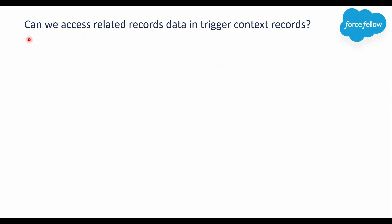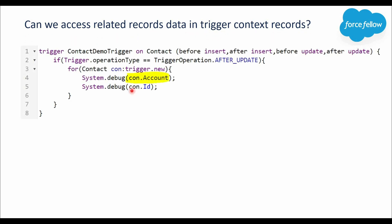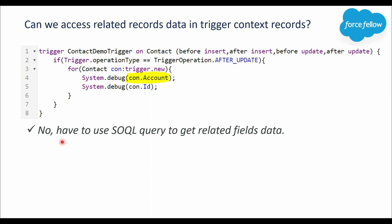Next question: can we access related records data in trigger context records? For example, on a Contact trigger, can we get the Contact's Account ID and name from trigger.new? The answer is no — in trigger context records we can only get data for the current record. If you additionally want data for related records, you must use a SOQL query.